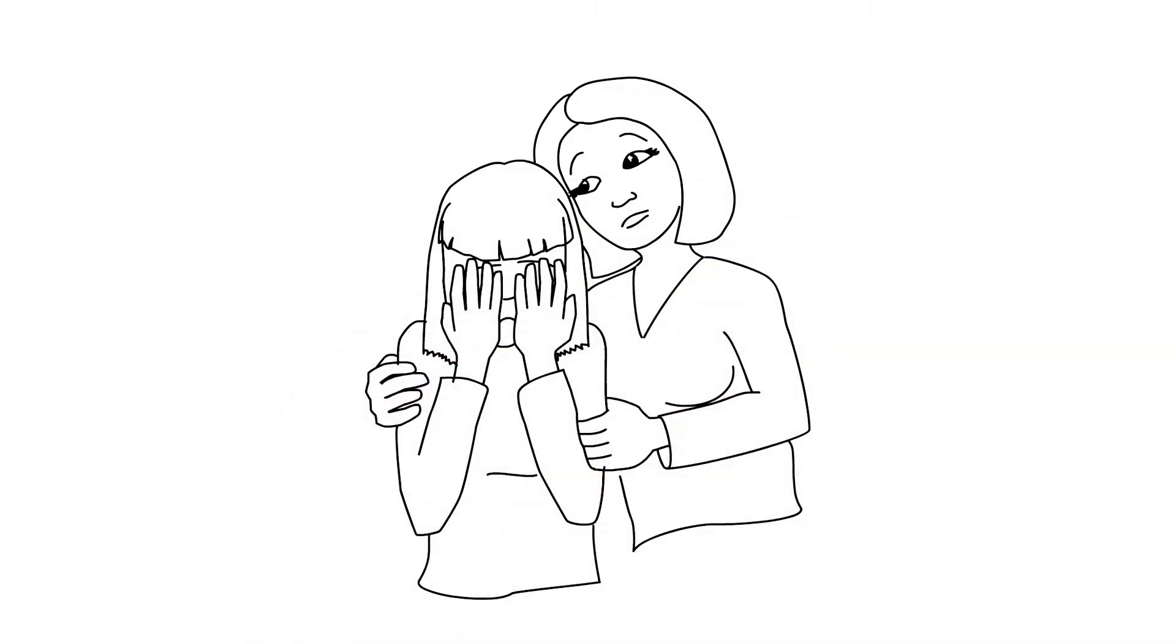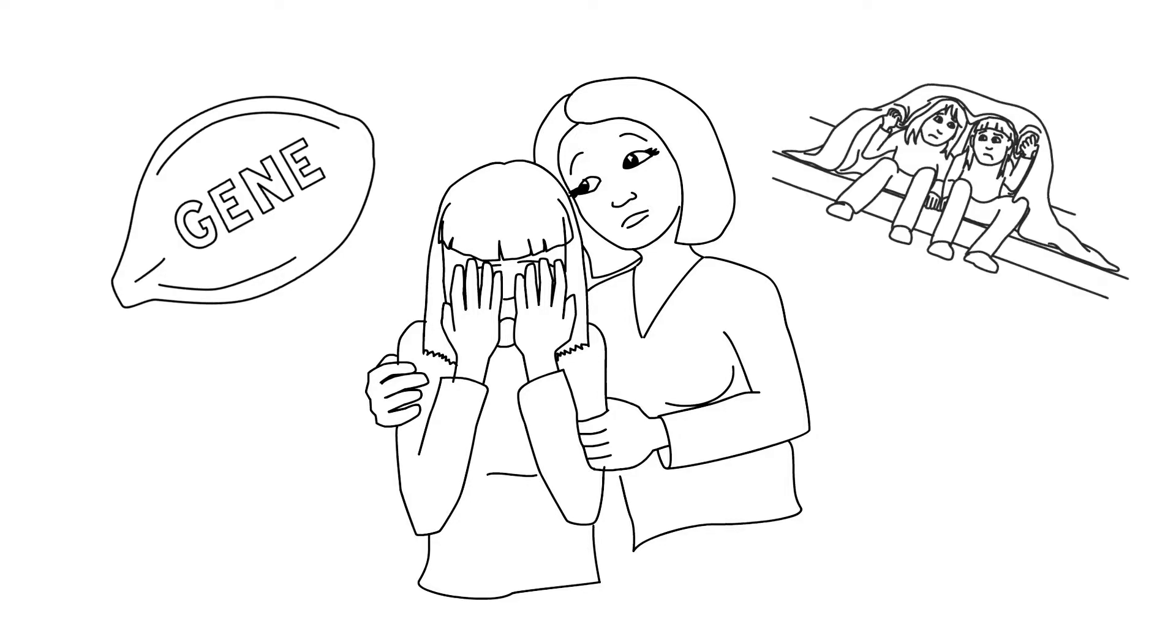If mental health conditions were simple and caused by a single gene, or if they were caused by an inherited gene plus trauma, it would have been likely for both Jen and Gwen to have developed bipolar disorder. But only Jen did.